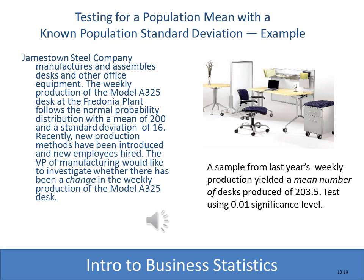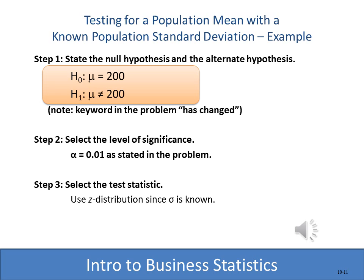Let's put this together with an example. A steel company that manufactures desks follows a normal probability distribution — which is always one of our assumptions — and we know the population mean is 200 and the population standard deviation is 16. They've tried a new production method and want to see if there's been a change — in other words, is it not equal to 200 anymore? The null hypothesis is that the mean is still 200; the alternate is that it's not. We don't know if it's larger or smaller — we just want to see if it changed.